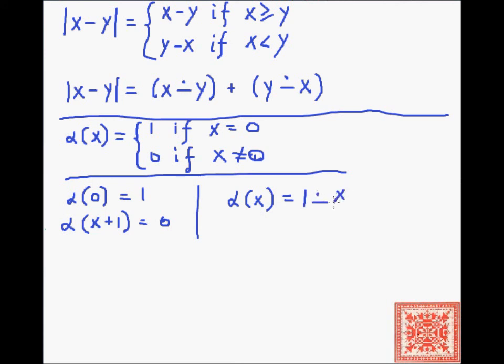That dot minus is primitive recursive. Alpha x is one dot minus x, so it is also primitive recursive.